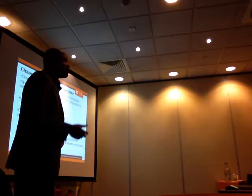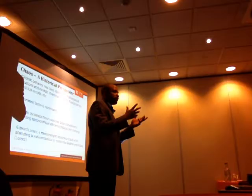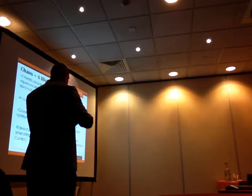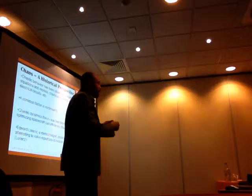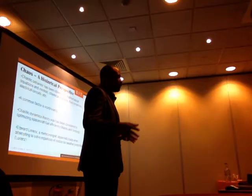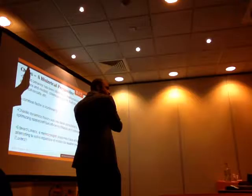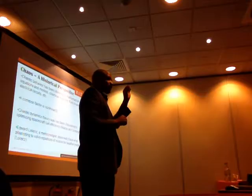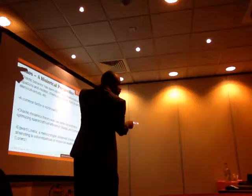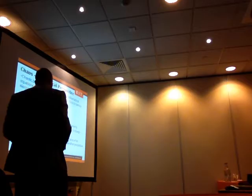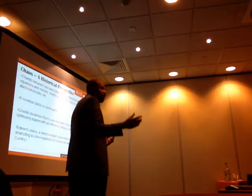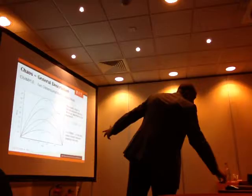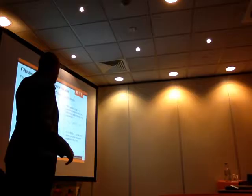Edward Lorenz, a meteorologist, set out to predict the weather using mathematical equations — the Navier-Stokes fluid dynamics equations. He came up with a set of equations and began to calculate by hand. He stopped for the day, came back, and started a little bit behind where he stopped. But he made a slight error in a few decimal places, and he began to see that the trajectories diverged. This was one of the first mathematical observations of chaotic processes — leading to the Lorenz equations and the butterfly effect.